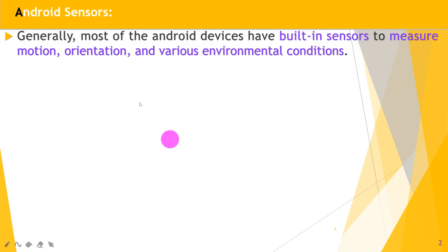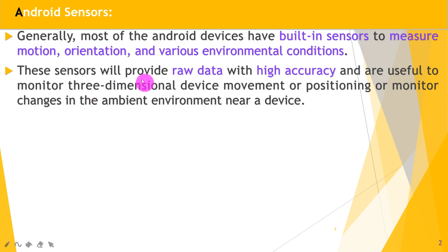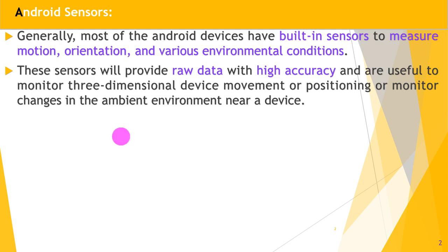In Android sensors, generally most Android devices have built-in sensors to measure motion, orientation, and various environmental conditions. These sensors provide raw data with high accuracy and are useful to monitor three-dimensional device movement or positioning, or monitor changes in the ambient environment near a device. These are either hardware or software devices, which we will see in the next upcoming slides.